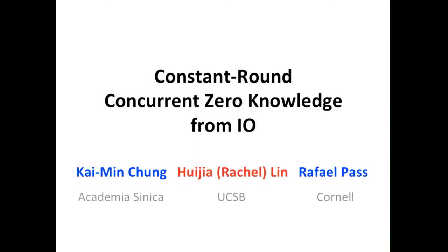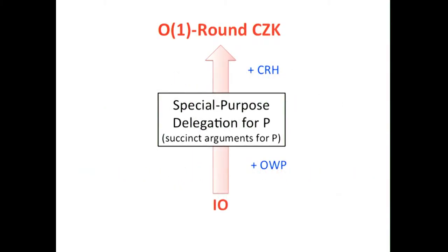I'm going to talk about how to construct constant-round concurrent zero-knowledge from IO. Interestingly, our construction will make use of a special purpose delegation scheme for P, which is some succinct argument for P. This shows an interesting connection between the two types of arguments: the zero-knowledge ones and the succinct ones.